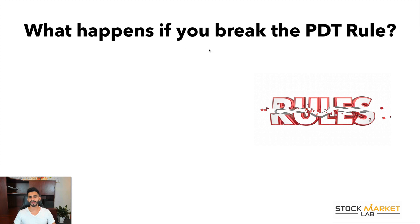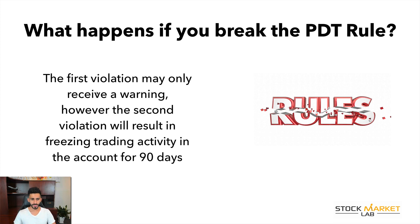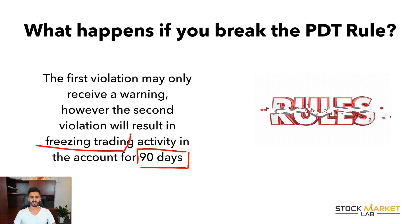Now, what happens if you break the PDT rule? The first violation may only receive a warning. However, the second violation will result in freezing your trading account or trading activity for 90 days. So make sure you don't go over this rule — it's very important to understand.